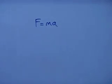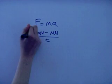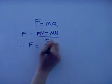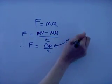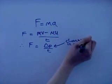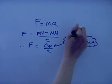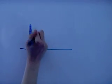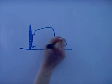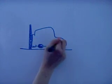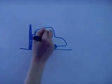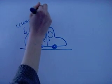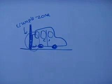We know that force equals mass times acceleration, but it can also be written as mv minus mu over t, which is the same as the change in momentum over time. In cars, there are crumple zones which increase the time over which a car decelerates, therefore decreasing the force exerted on anything inside the car.